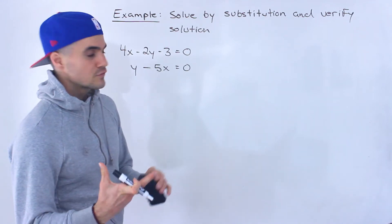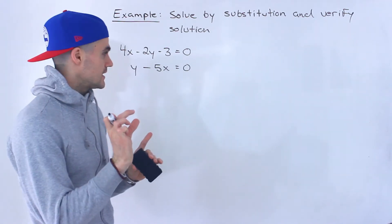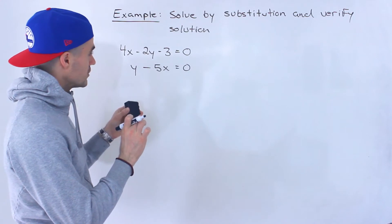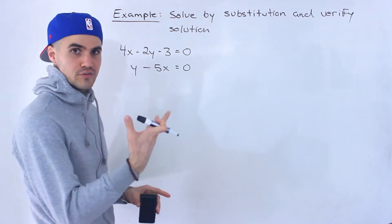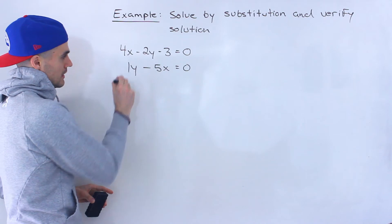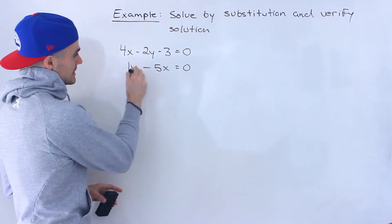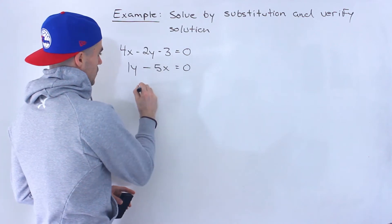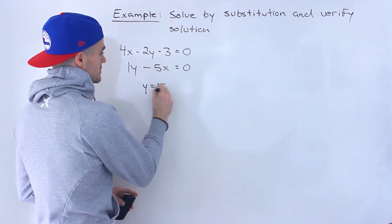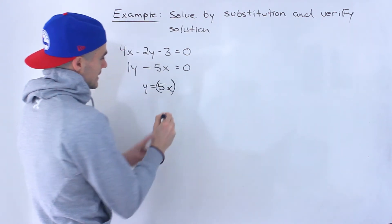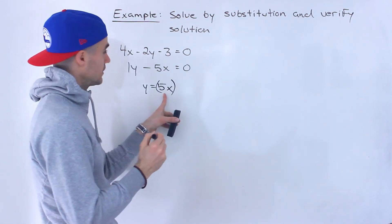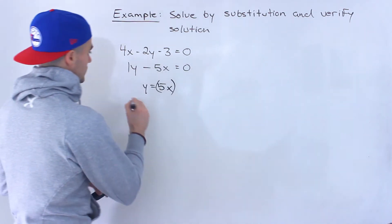Now with substitution, the first thing I like to look for is variables that have a leading coefficient of 1, and notice that this y has a coefficient of 1. So I'm going to isolate for y by bringing the negative 5x over, so we'll have y equals 5x, and then I'm going to substitute this expression 5x in for the y value.